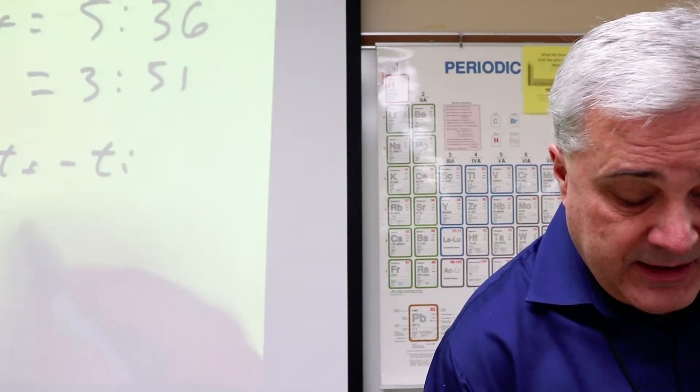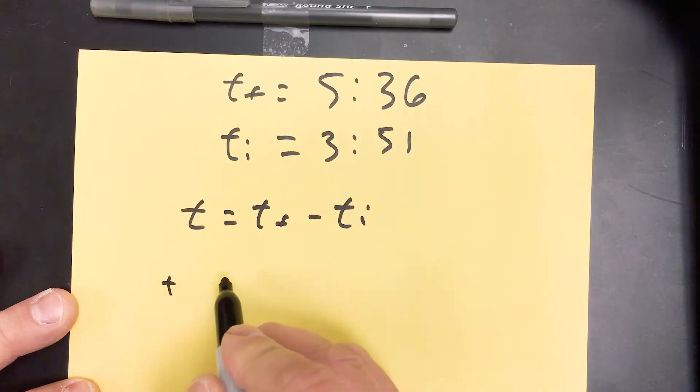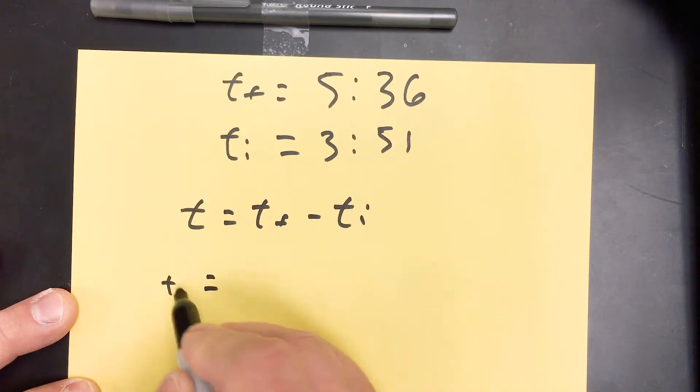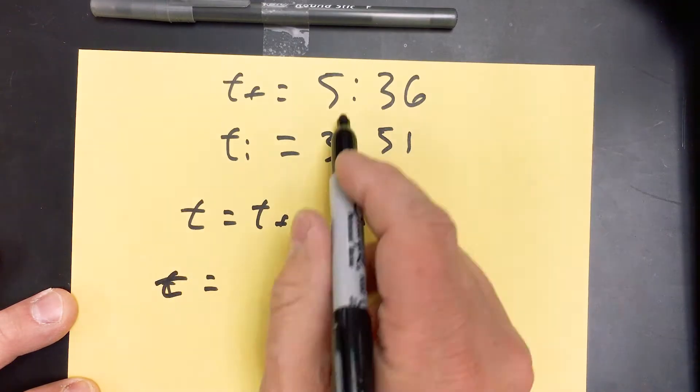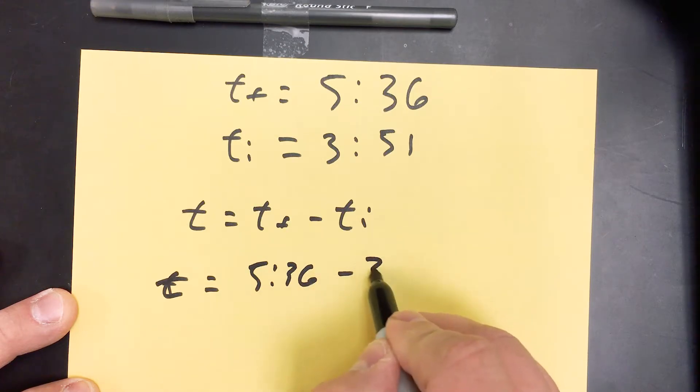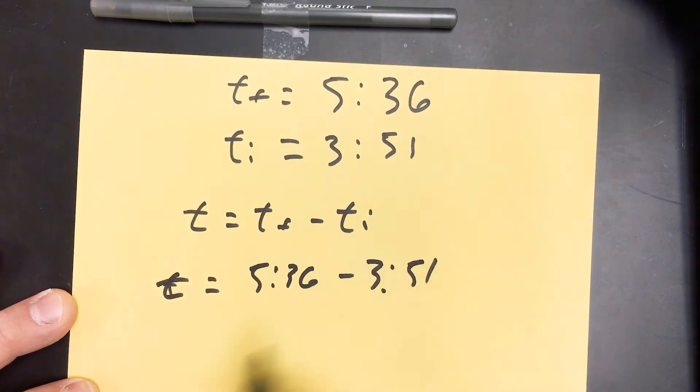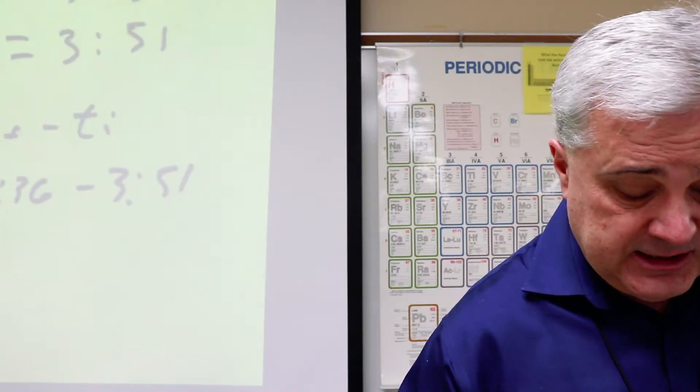So step 2 would be to write down the relevant formula, which is T equals T sub F minus T sub I. Plug in what you've got. So T equals 5:36 minus 3:51. I'm going to do the vertical subtraction again.